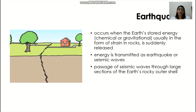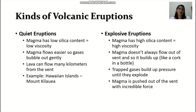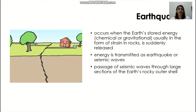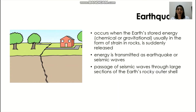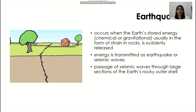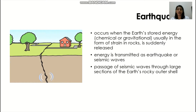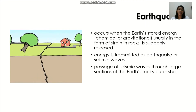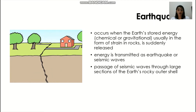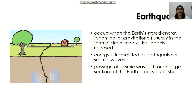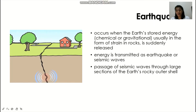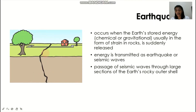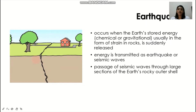Going back, this has been an overview and recall of your concepts about volcanism. Now let's discuss earthquakes. Earthquakes occur when the Earth's stored energy — whether chemical or gravitational energy, usually in the form of strain — is suddenly released. This energy is transmitted as earthquake or seismic waves, which cause tremors on the land surface.